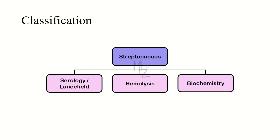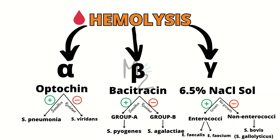Streptococci are classified based on serology using the Lancefield classification. Enterococcus belongs to group D. They are also classified on the basis of hemolysis and biochemistry. Alpha hemolytic do partial hemolysis; beta hemolytic do complete hemolysis on blood agar; gamma hemolytic do no hemolysis. Alpha hemolytic are further classified by optochin sensitivity into strep pneumoniae and strep viridans, while beta hemolytic are classified by bacitracin sensitivity into group A (strep pyogenes) and group B (strep agalactiae).